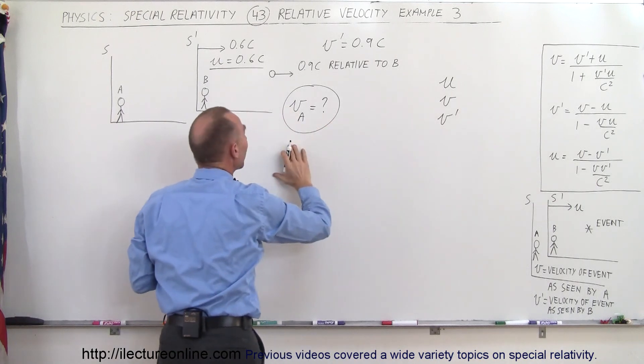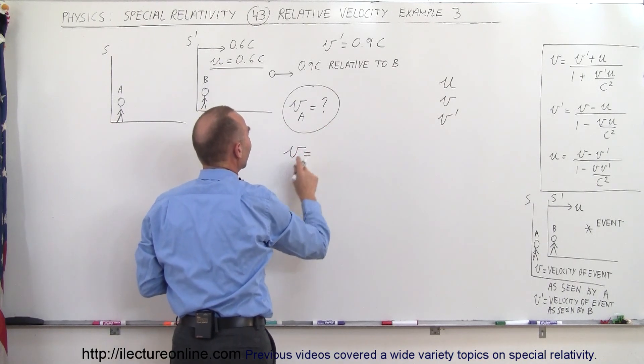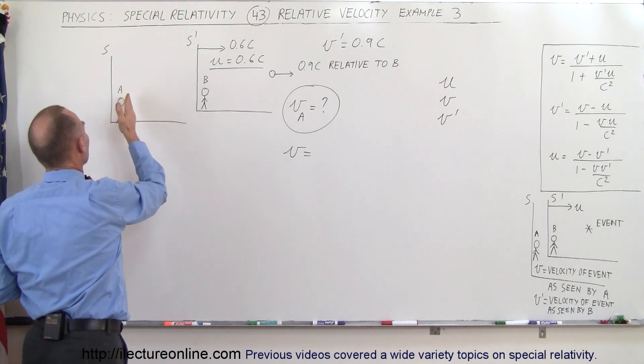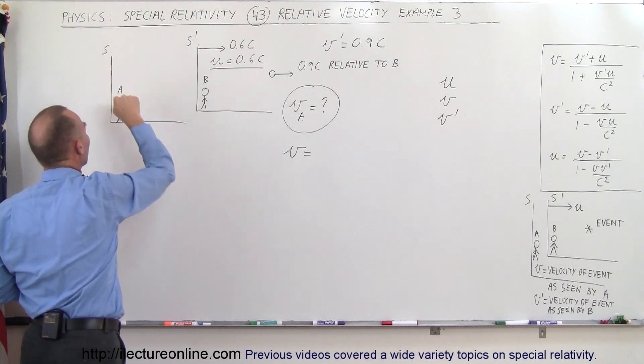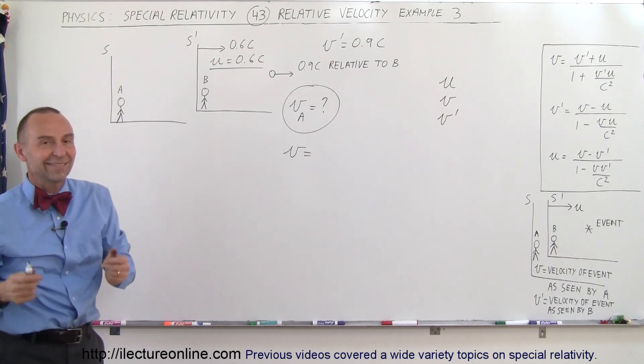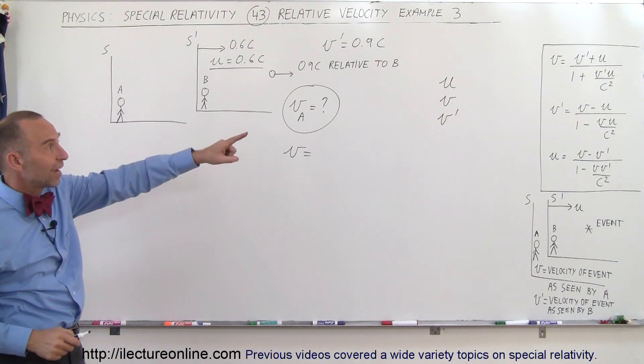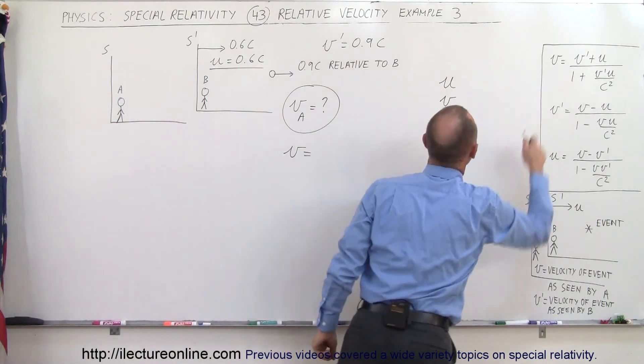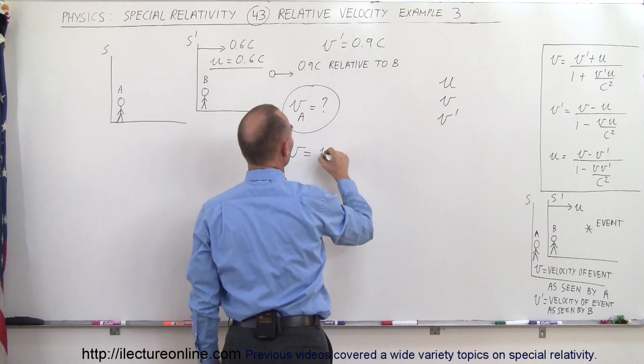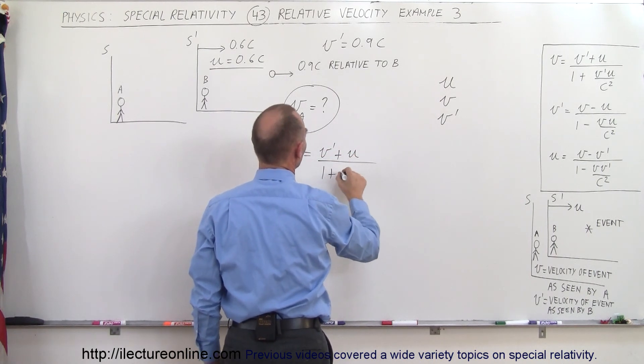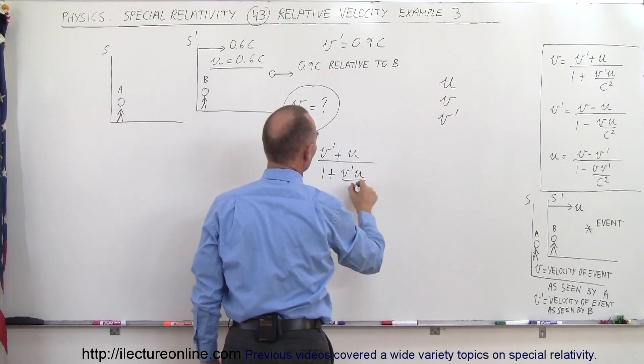Which means that V sub A would simply be V because that's the velocity as seen by the stationary observer, which is observer A in the stationary reference frame. So V and V sub A is the same thing. Now we need to find the form of the equation that helps us solve for V. That would be the top form right there. So V is equal to V prime plus U divided by 1 plus V prime U over C squared.